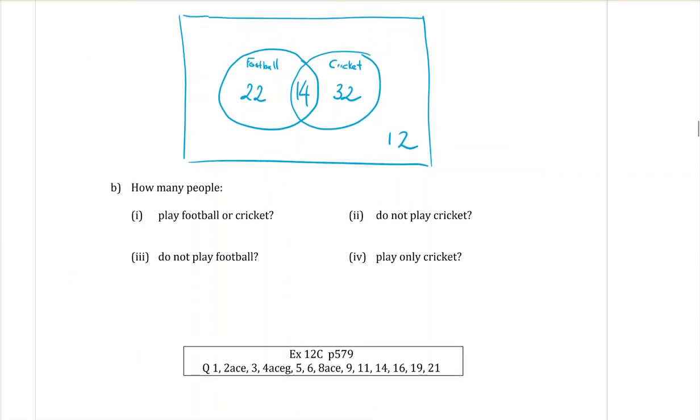Part B, how many people—this is the cardinal number, we're not asked for a probability here—how many people play football or cricket? Cricket or anything in those circles, the union of all of those parts. So that is going to be the 22 plus the 14 plus the 32, which is equal to 68 people who play football or cricket.